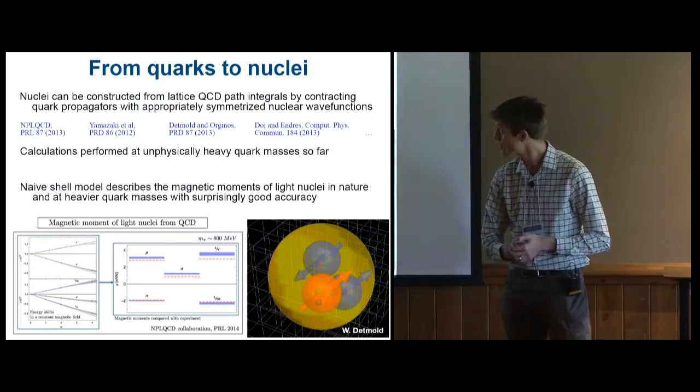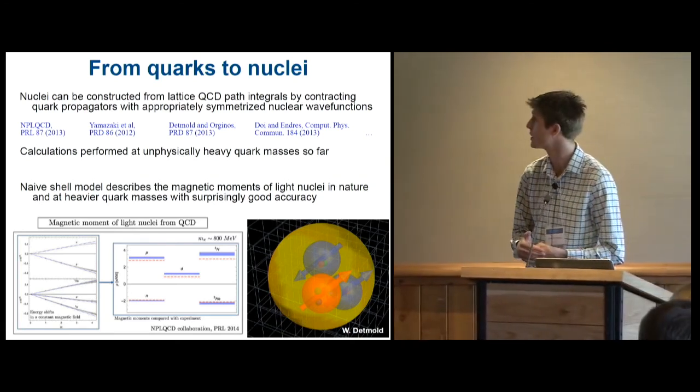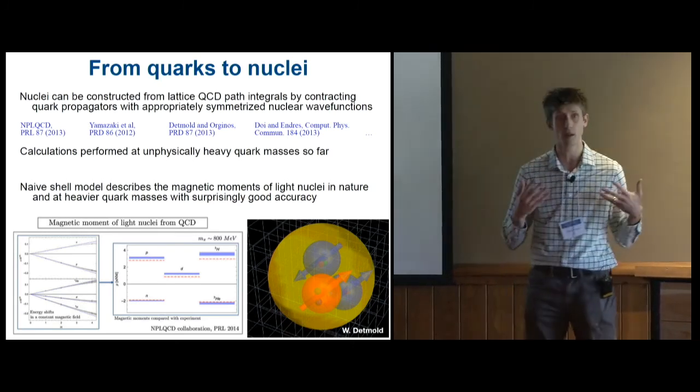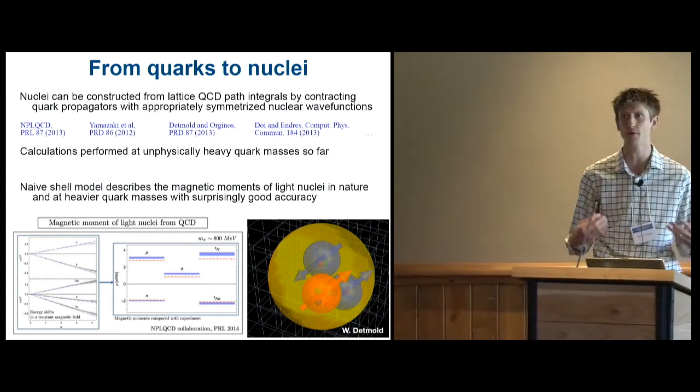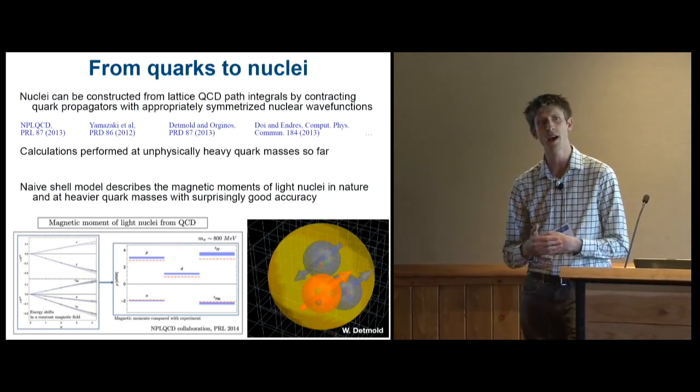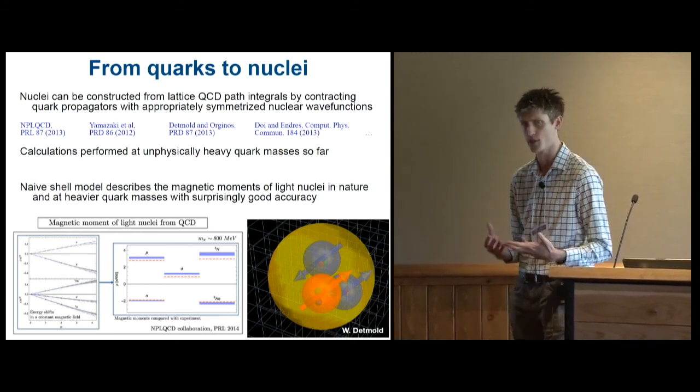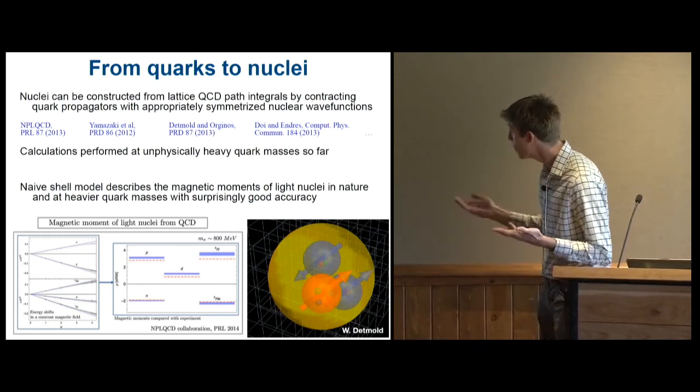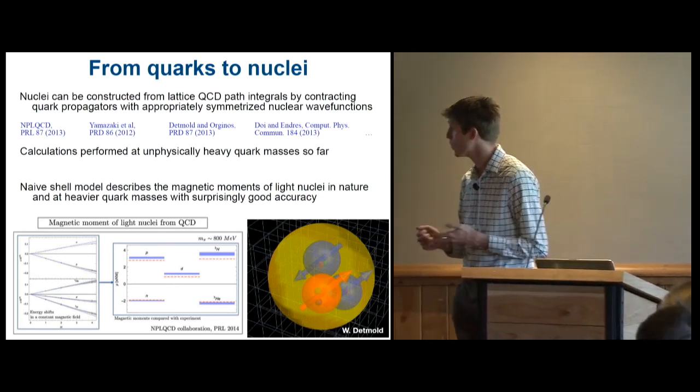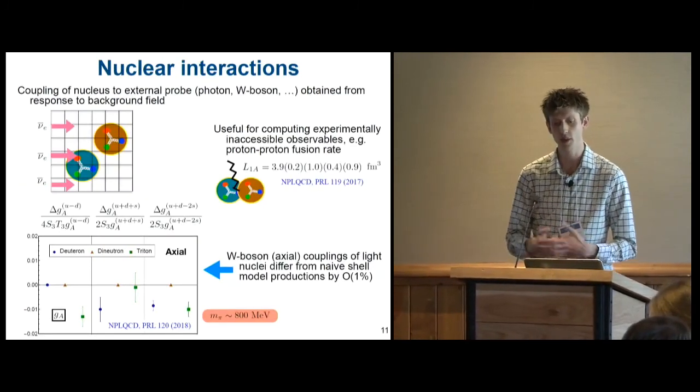So you can even do nuclei this way. So far, everything's been done at unphysically quark masses, unphysically heavy quark masses for reasons I'll mention in a moment. And that naive shell model that I mentioned a minute ago actually does a pretty good job of describing what nuclei roughly look like both in the real world and in this fictitious world of unphysically heavy quark masses. And this didn't have to be that way and points to some underlying simplicity of QCD that we don't really understand yet. But we observed that magnetic moments of light nuclei calculated by the NPL-QCD collaboration back in 2014 are pretty close to the predictions that you would expect from just adding up the spins.